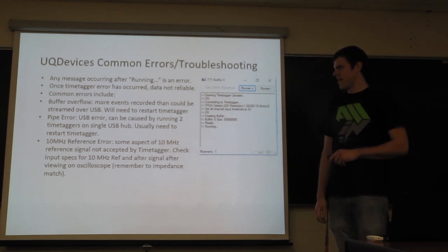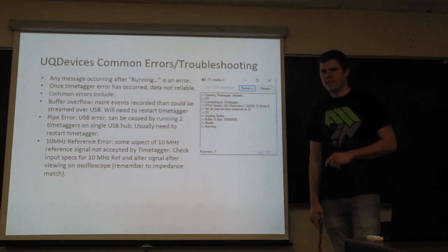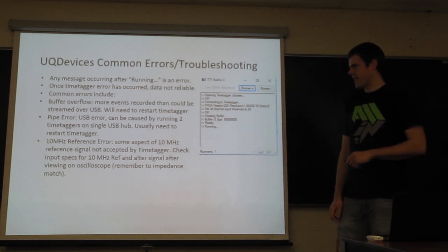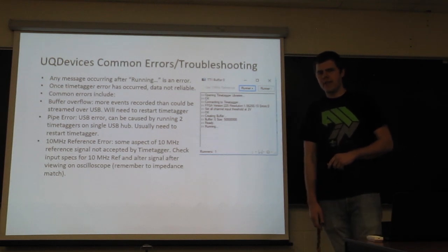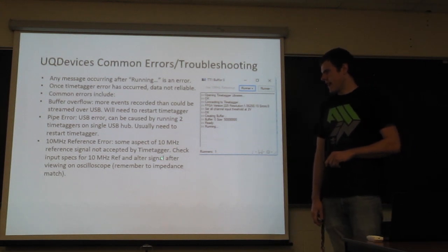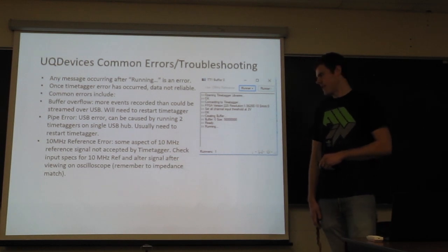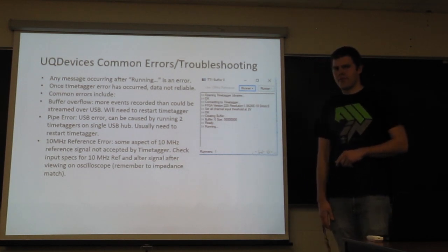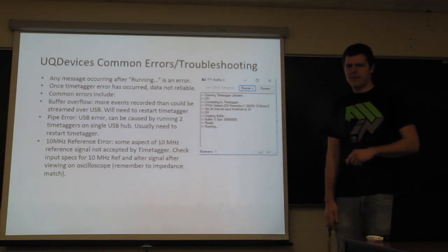Additionally, you can have a pipe error. I think this is a USB communication error. And sometimes this is an error that you could ignore, but if you want to be safe, you need to turn off the time tagger and restart the connection again. And then finally, if you are trying to use the 10 MHz reference and you have an error, then you need to double check the specifications and check your signal on the oscilloscope to verify that they match the specifications. And I'll reiterate that you need to make sure your impedance match because the oscilloscope is almost certainly going to have a different impedance than the input to the 10 MHz reference.